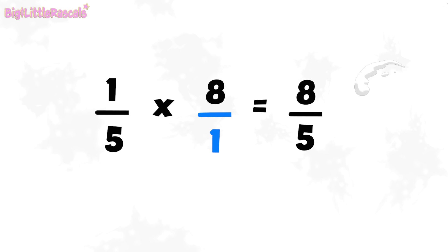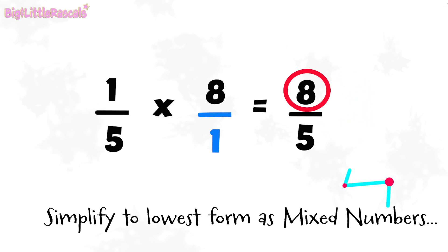Eight out of five. But, hang on a second. If you see closely, the top number eight is bigger than the bottom number five. So, the fraction can still be simplified into lowest form as mixed numbers.